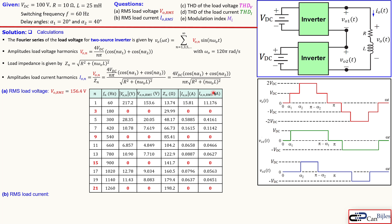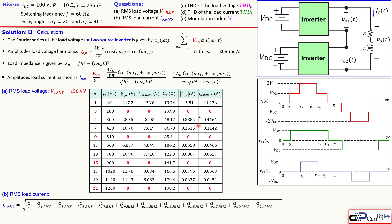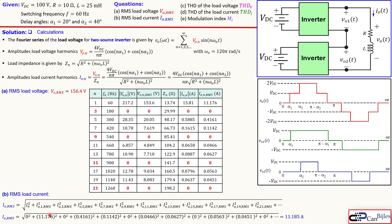The RMS load current is calculated by taking all the individual harmonic RMS values, squaring each one, and summing. The average load current is zero. The first harmonic RMS contributes 11.176 A, followed by contributions from the 5th (0.4161), 7th (0.1142), and so on, with the 3rd, 9th, 15th, and 21st harmonics eliminated. Summing to infinity gives 11.185 amps.